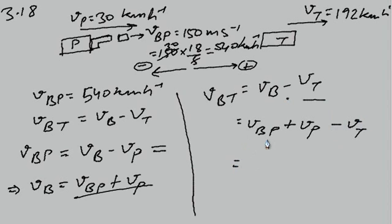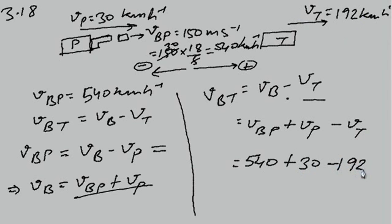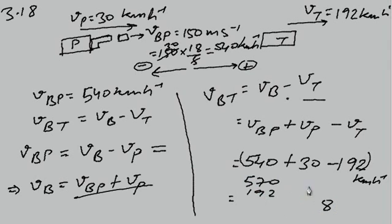Substituting the values — velocity of bullet with respect to police car is 540 km per hour, plus velocity of police car which is 30 km per hour, minus velocity of thief's car which is 192 km per hour. So 540 plus 30 minus 192, giving us 378 km per hour.